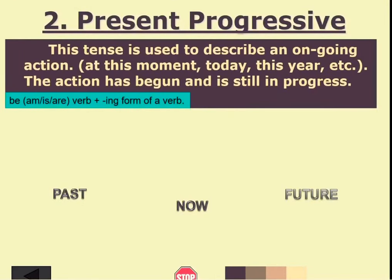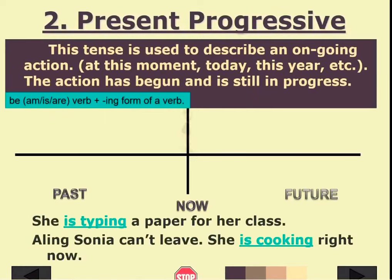Next we have the present progressive tense or aspect. This tense is used to describe an ongoing action at this moment, today, or this year. For example: 'She is typing a paper for her class' — she is doing this right now. 'Aling Sonia can't leave; she is cooking right now' — she is doing this at this very moment. That expresses present progressive tense.